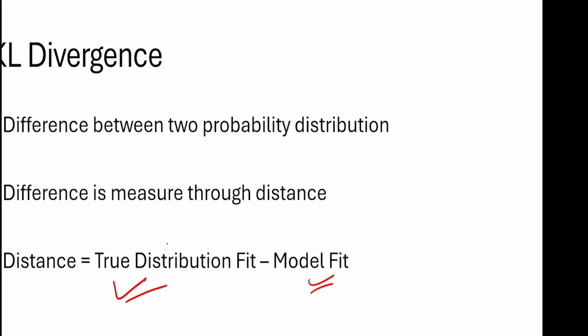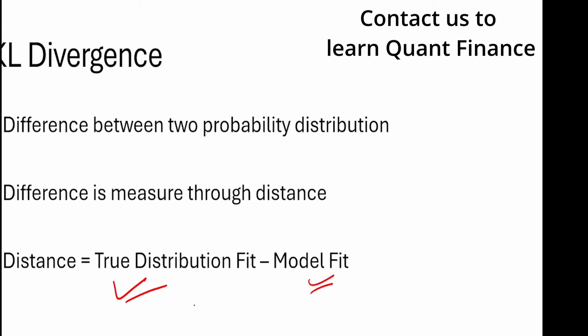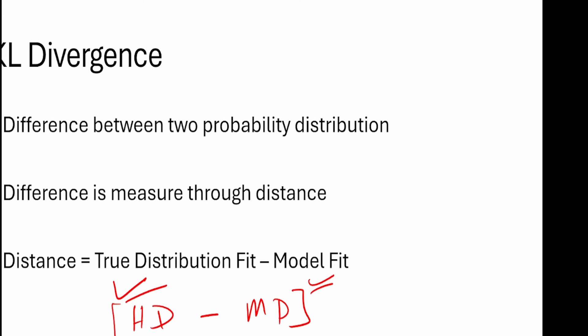If you've ever built a model using historical data — realized data — this is the historical data and the model has generated some new, empirical data. The distance between that is measured using KL divergence. There are many use cases across different fields: in machine learning, in finance, in telecommunications and engineering. Simply put, it's a way of calculating distance between two data sets.